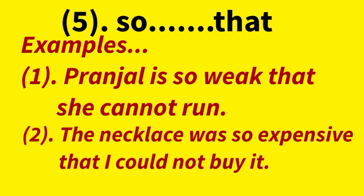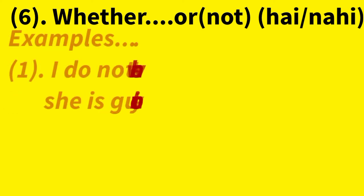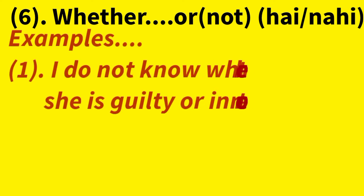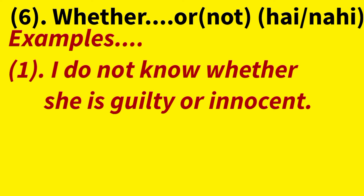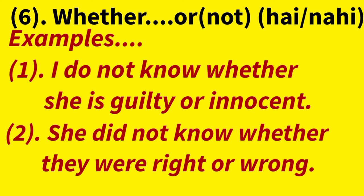The last correlative conjunction is whether...or not, meaning 'hai ya nahi.' First example: I don't know whether she is guilty or innocent — main nahi janta ki woh guilty hai ya innocent hai. Second example: She did not know whether they were right or not.